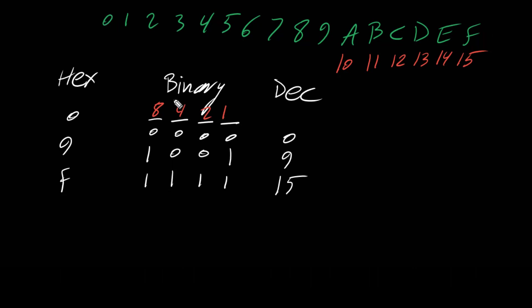Why exactly 4 bits? Because 3 bits is not enough to cover 0 to F, and 5 bits is more than needed since we only have 16 values in hexadecimal. So for every hexadecimal digit we have 4 bits, with some bits turned on and some turned off. For example: 0 has all 4 bits off; 9 is 1001 in binary; and F has all 4 bits on, giving us 15 in decimal.